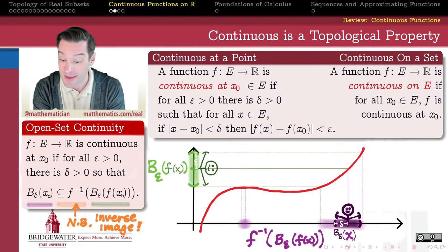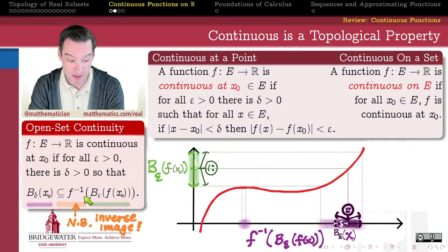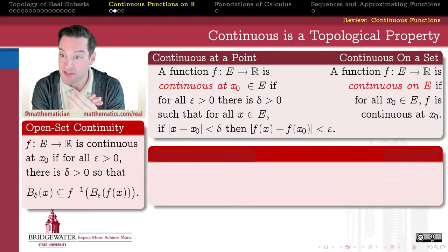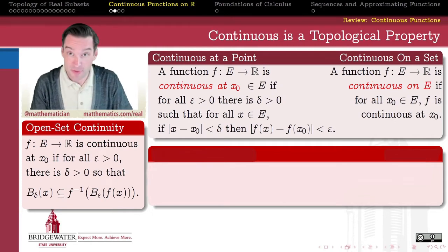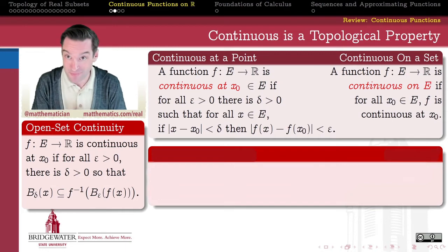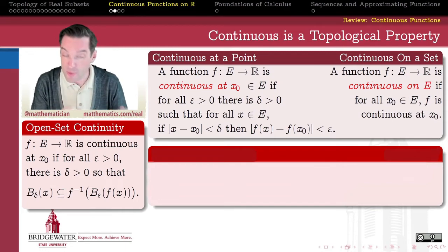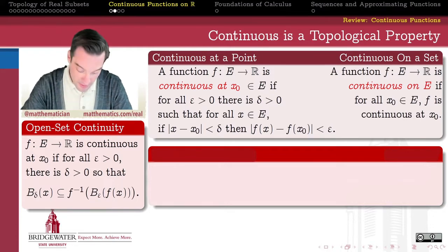That was the open set definition. I call it the open set definition because the only things we need to know are what open neighborhoods mean and what inverse images of sets mean — both purely set-theoretic and topological ideas; no arithmetic, no geometry. Open sets are not the only purely topological idea though. They are what we use first and foremost to define topology itself, but as soon as we define open sets we often want to speak about sequences. Let's see if we can reformulate continuity using sequences rather than just open sets.